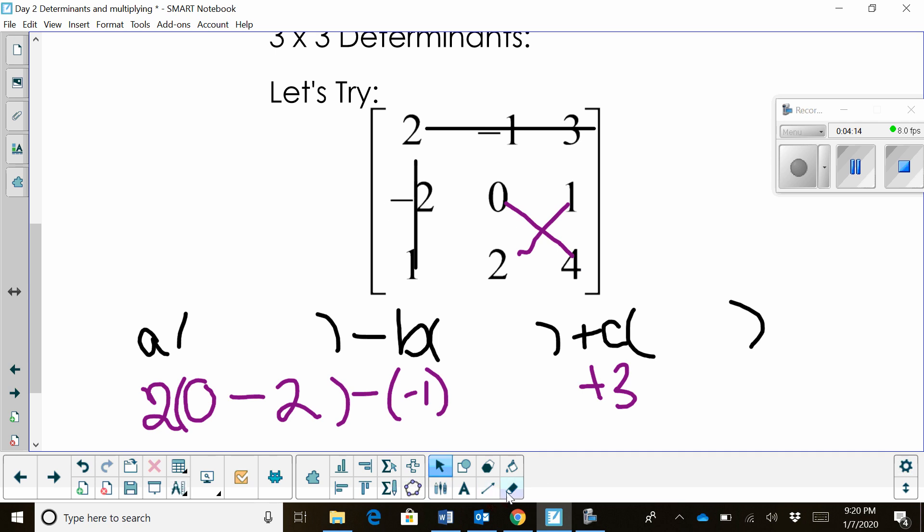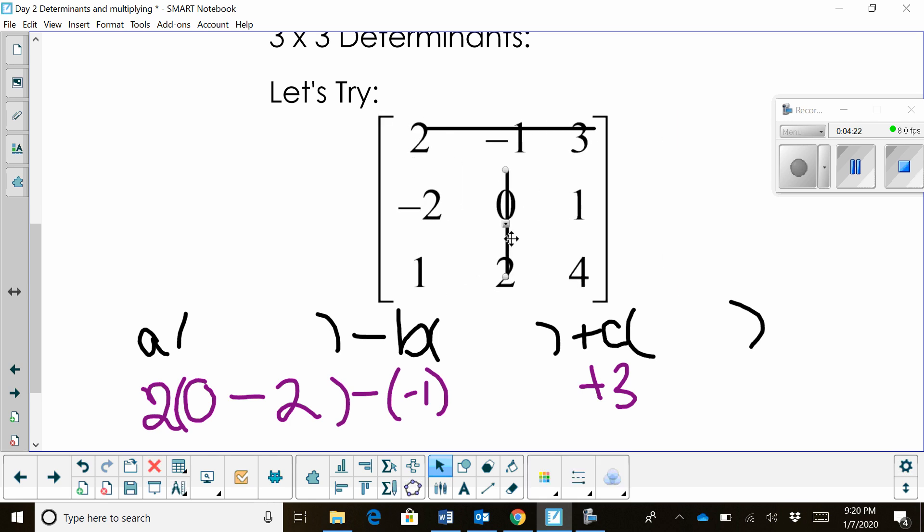Then I'm going to move. Well, let me erase my 2 by 2, my product here. And I'm going to move over and, whoops, I'm going to look at B. So B is negative 1. So I'm going to keep that same row slashed out. And the column now I'm taking out is B, B's column.